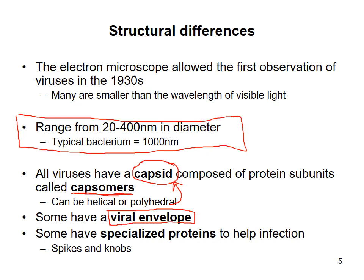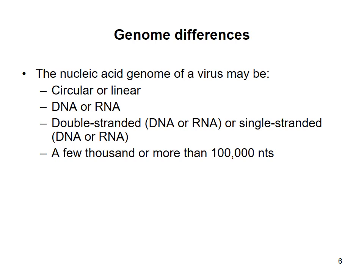Viruses have their own individual genome, and that genome can be anything from DNA to RNA. It can also be single-stranded or double-stranded in a circular or linear format. Either way, the size will usually vary from a few thousands to over 100,000 nucleotide bases.